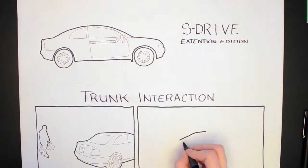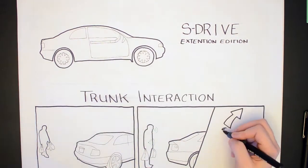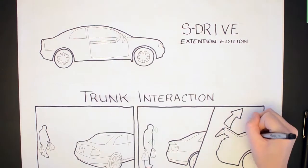But not anymore with the S-Drive. Exterior sensors are able to detect your presence and with a single voice command, your trunk will be opened or closed quickly and easily without slowing you down. Hey, can you get the trunk?